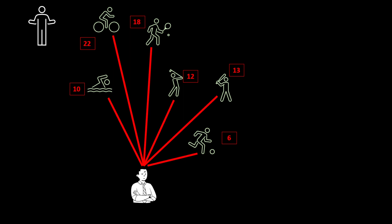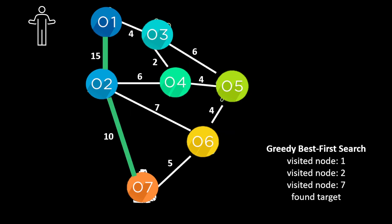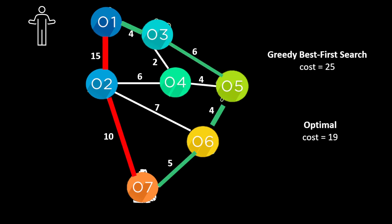Here we look at our signposts with the distances, and here, once we start to look at the distances, we get the path to our goal from 1 to 2 to 7, which is actually a cost of 25 rather than the optimal cost of 19.